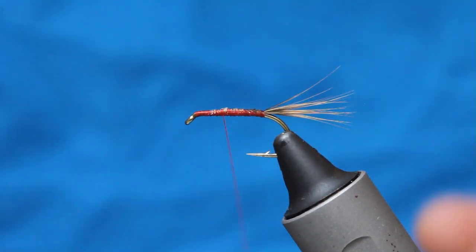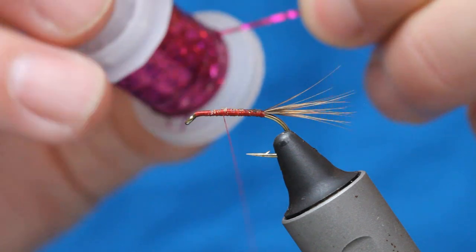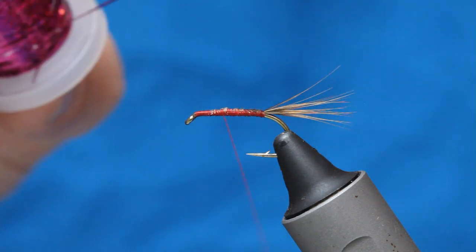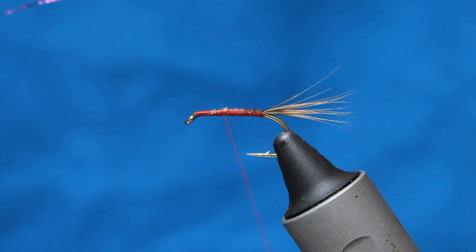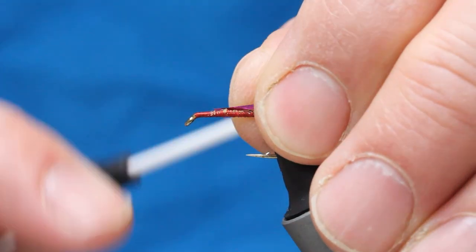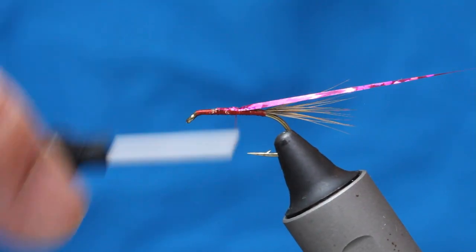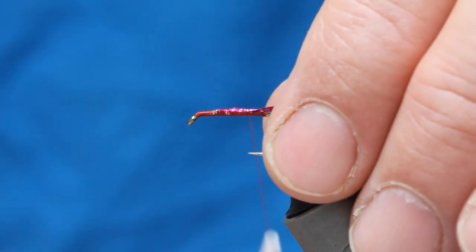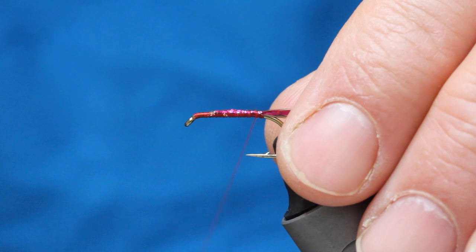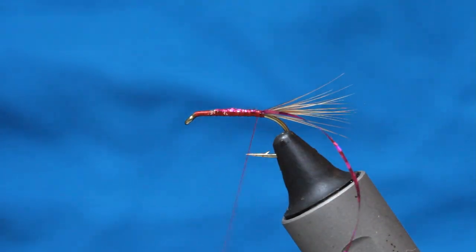We now come in with this, like I say, cranberry holographic. Just take some off of that bobbin there. A red holographic is nice as well. I just like this cranberry. I've just got to take that in and catch it in. So it's on your side of the hook shank. I'm going to rib in the opposite direction to my dubbin.